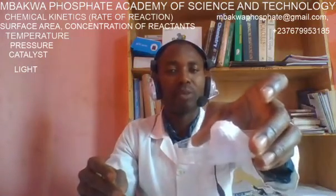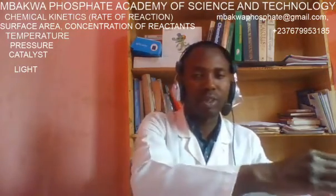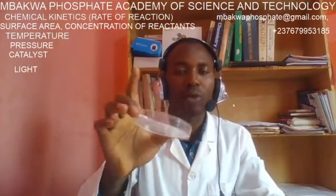So the first factor that affects the rate of chemical reaction is surface area of the reactant. If you increase the surface area by using powder calcium carbonate instead of the lump form, you will observe that the reaction will be faster when we use powder calcium carbonate instead of the lump form.